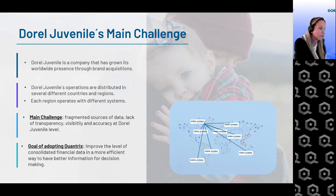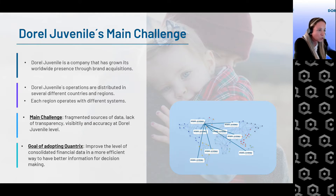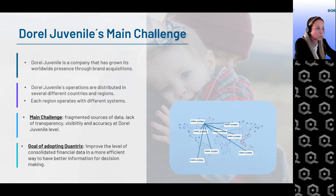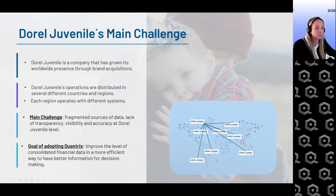Doro Juvenile has grown its worldwide presence through brand acquisitions, and our operations are distributed across several countries and regions. Each country operates with different languages, different currencies, and different systems. We had fragmented sources of data, lack of transparency, and inaccuracy at the corporate level. Our goal in adopting Quantrix was to improve consolidated financial data in a more efficient way, so we can make decisions at the right time with the most reliable data.